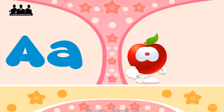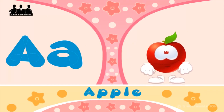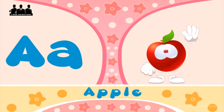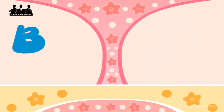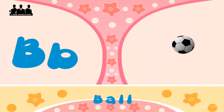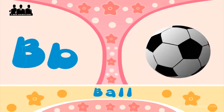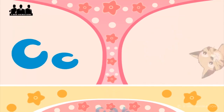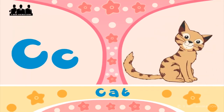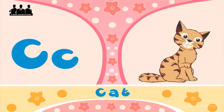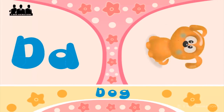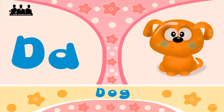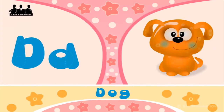A is for apple, a-a-apple. B is for ball, b-b-ball. C is for cat, c-c-cat. D is for dog, d-d-dog.